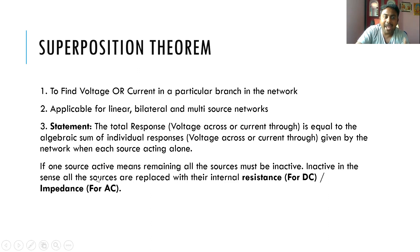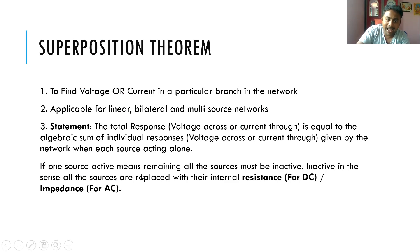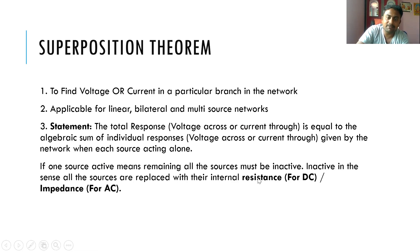In applying the Superposition Theorem, we activate each source one at a time. When one source is active, all remaining sources must be inactive. Inactive means all sources are replaced with their internal resistances. For DC circuits we use the term internal resistance; for AC circuits we say internal impedance. The theorem is applicable for both AC and DC.